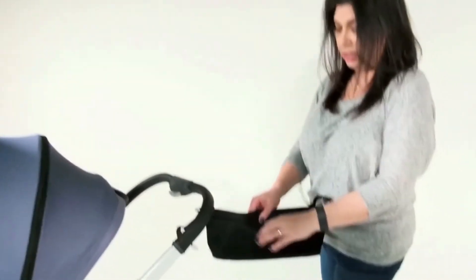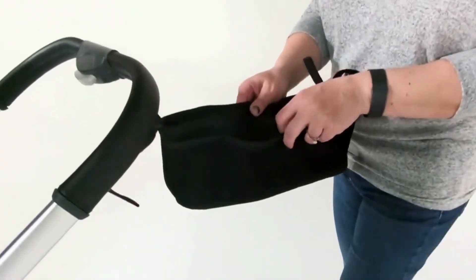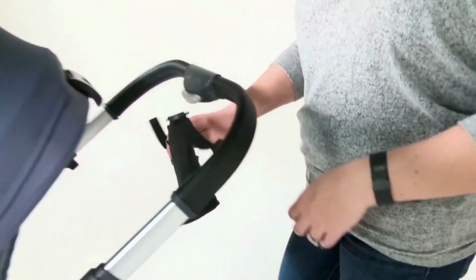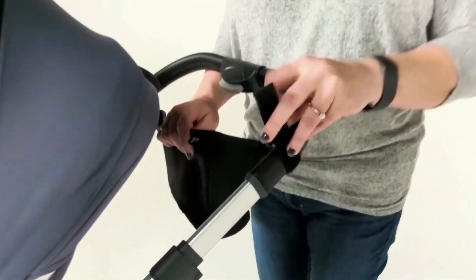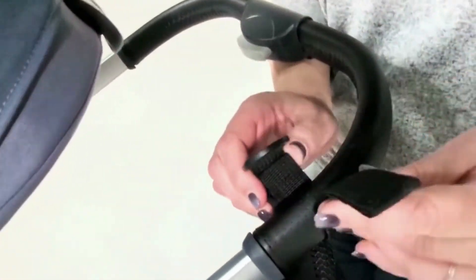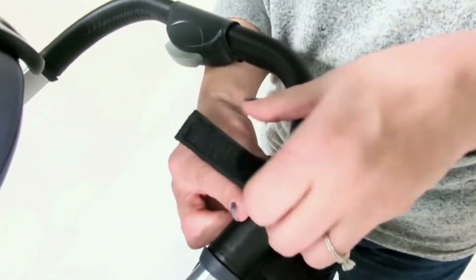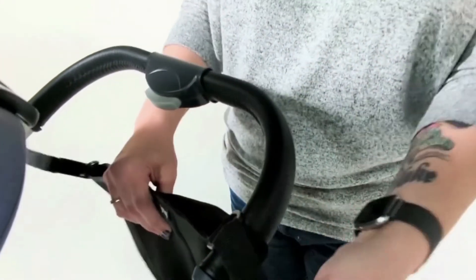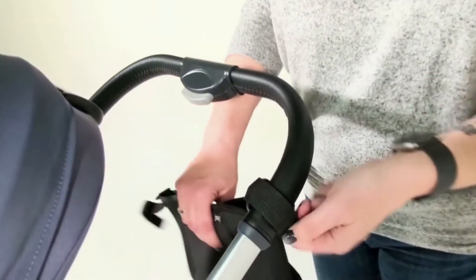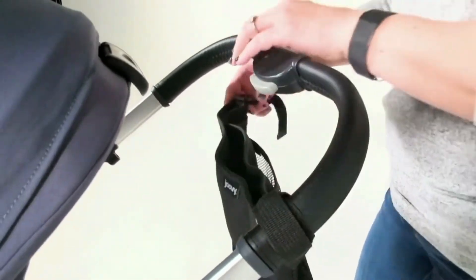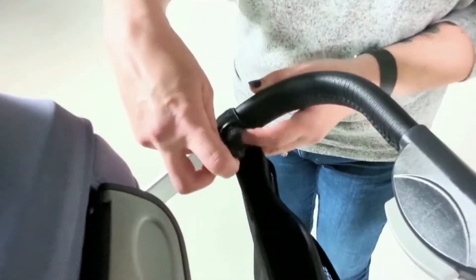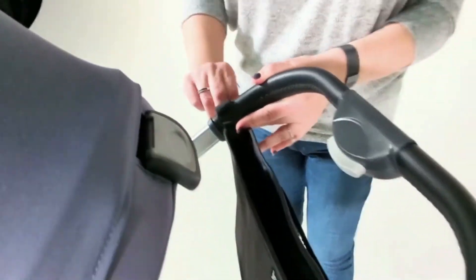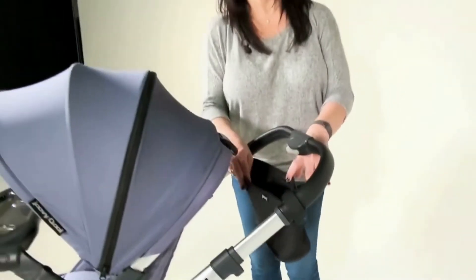You're going to want to go under the handle with the strap, through the d-ring, and then back around the handle to attach the velcro. Again, under the handle, over, through the d-ring, and back around to attach the velcro. And that's how you install your parent organizer.